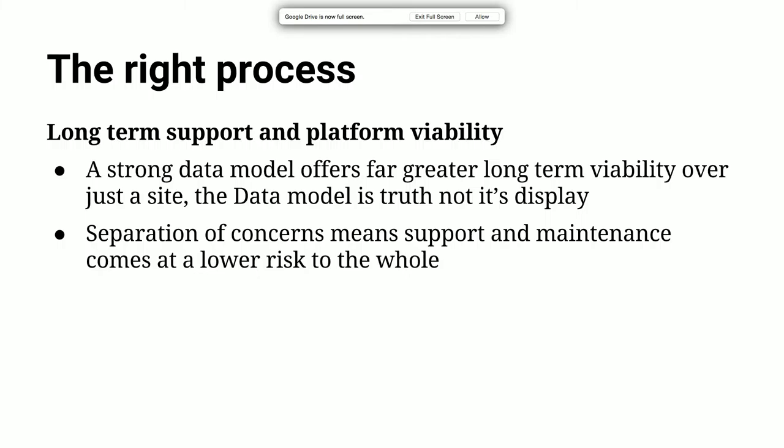Once we've finished building something, the decoupled model has greater long-term viability. Even if the API becomes redundant, we still have the established data model, and because it's structured in something like JSON, we have an easy way to get the data out — it's not a Drupal MySQL database. The viability of the data model is strong, and the API can live longer because the front-end isn't really paired to it. A separation of concerns also means that support and maintenance come at lower risk — if we have a Drupal back-end with an Angular front-end, we can focus on fixing issues in the Angular app without necessarily touching the API.